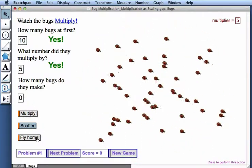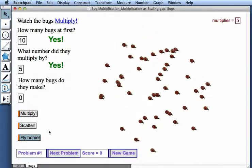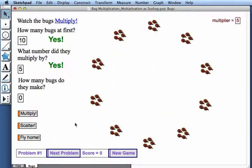Just to check, I'm going to press Fly Home. And again, I see 10 groups of bugs with 5 bugs in each group, so I think 50 is correct.